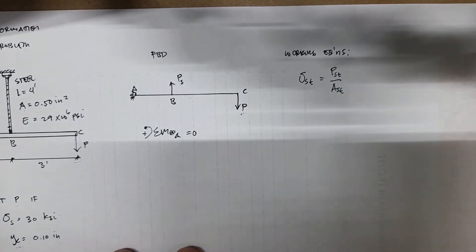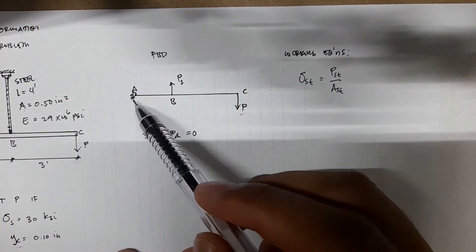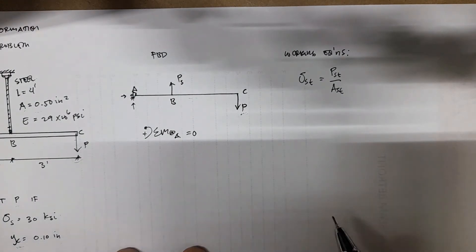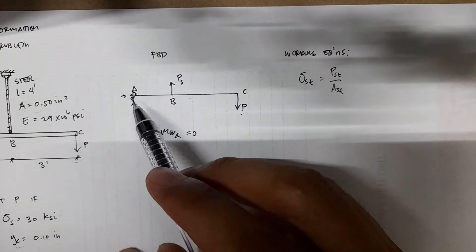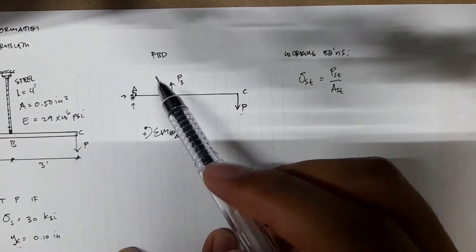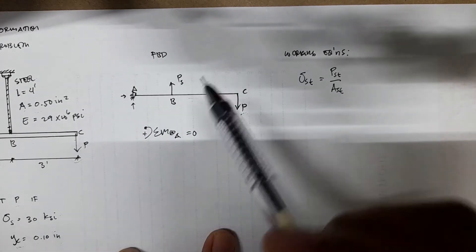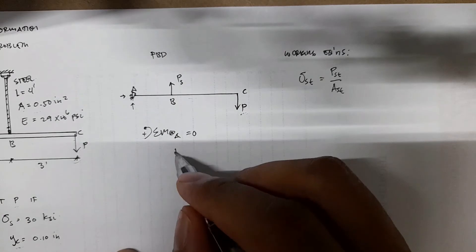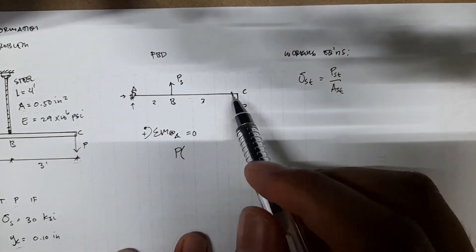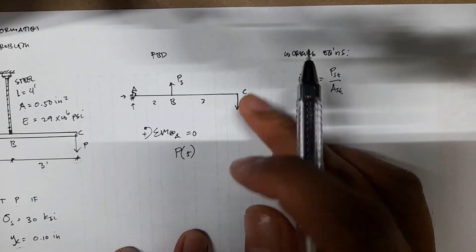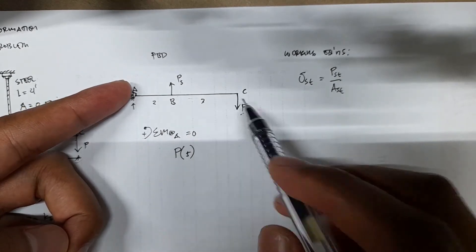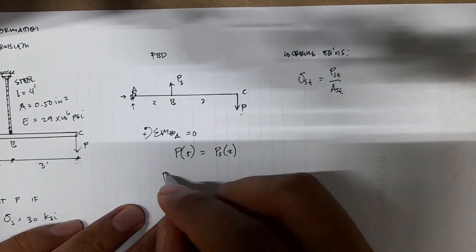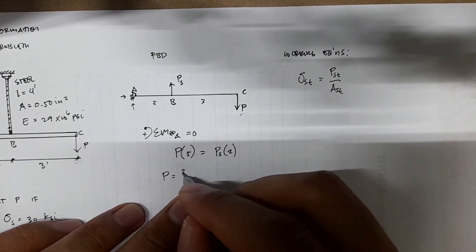The easiest way is to solve for moment at A. Summation of moments equals 0. If you do summation of forces, you'll have two reactions, X and Y, giving more unknowns than summation of moments. Summation of moments at A equals 0, setting counterclockwise positive. We have P times the moment arm, which is 5 feet. Then PST with moment arm of 2 feet. So we can have P in terms of PS as 2 over 5 PST.